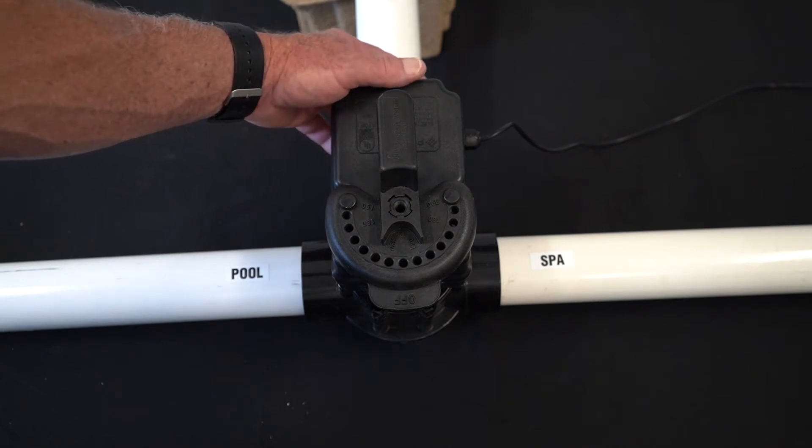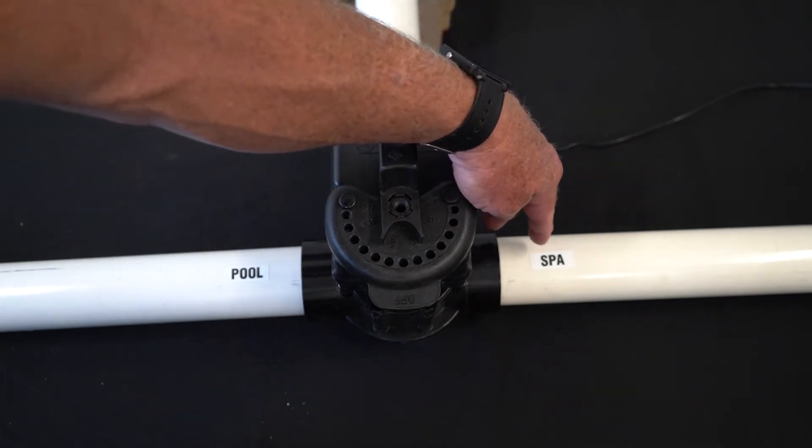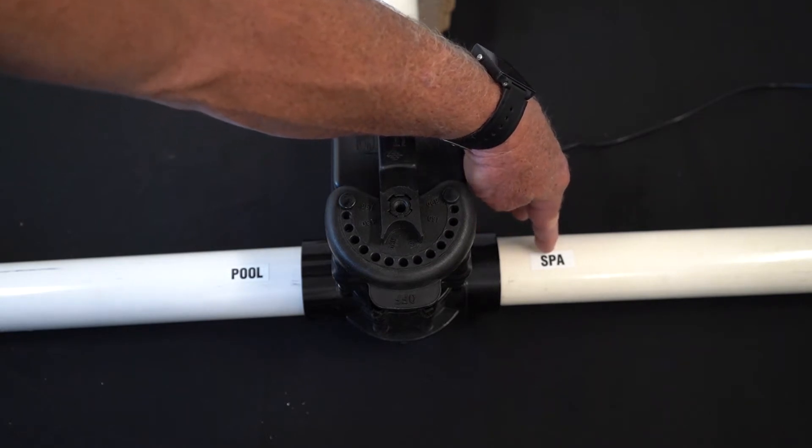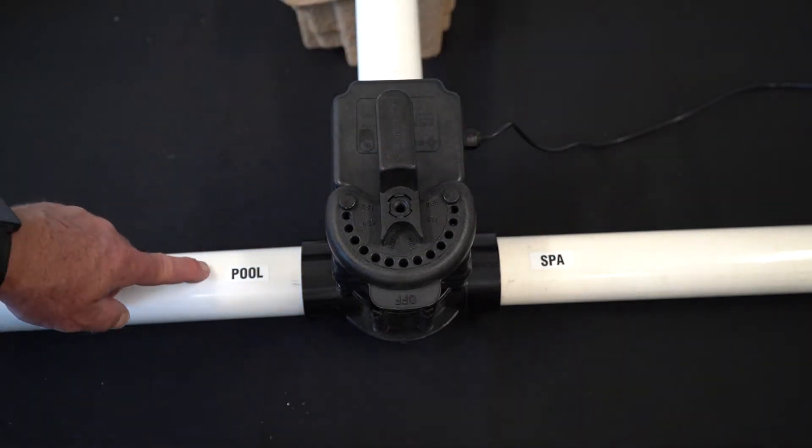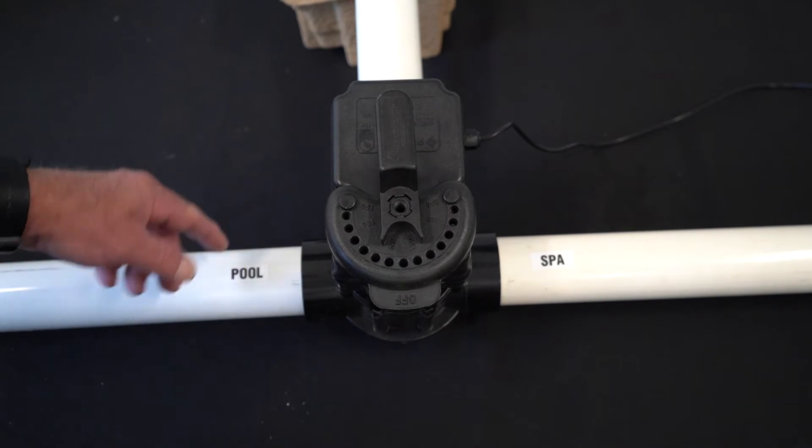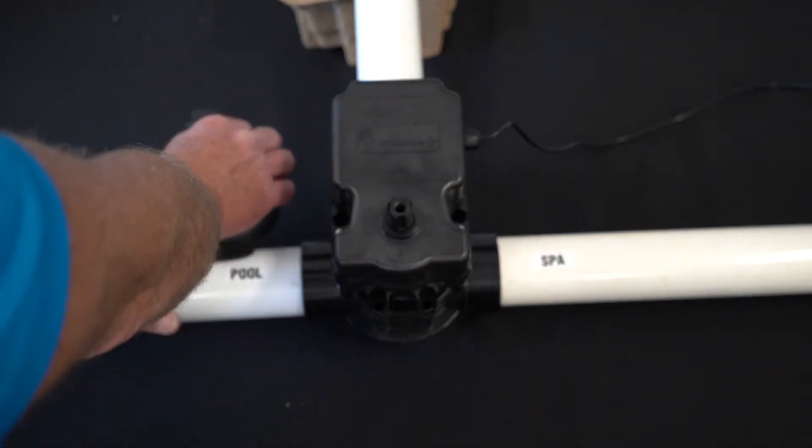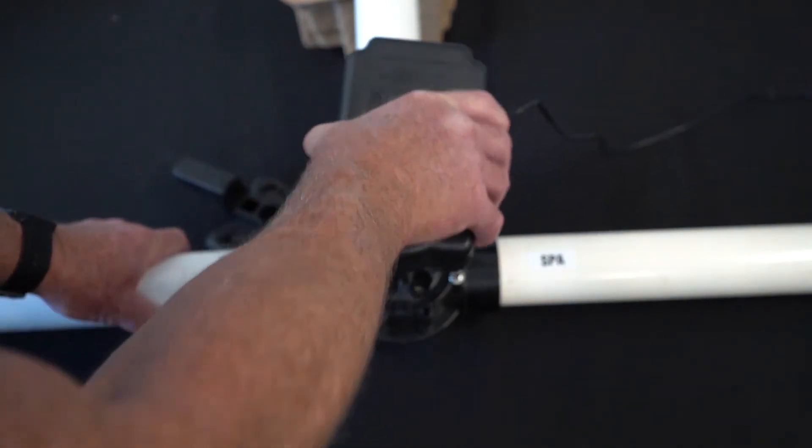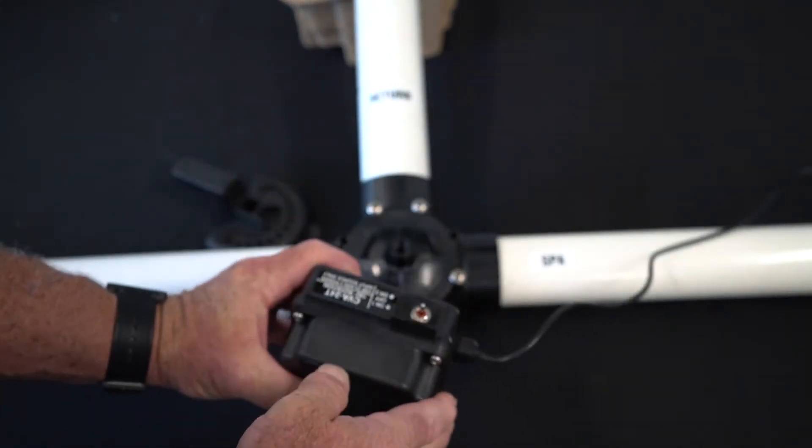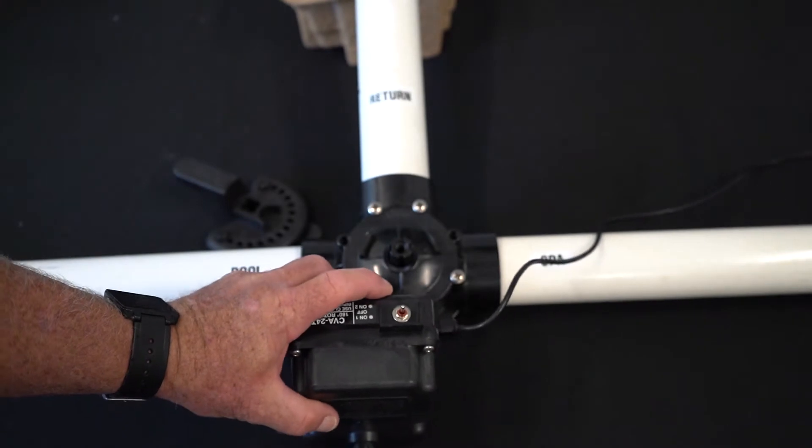Also, out of the box, it will go 180 degrees. So if you had spa mode, it will go straight into spa mode and into pool mode. There is a switch on the back of it that you will use to set the position. It is a three position toggle switch.